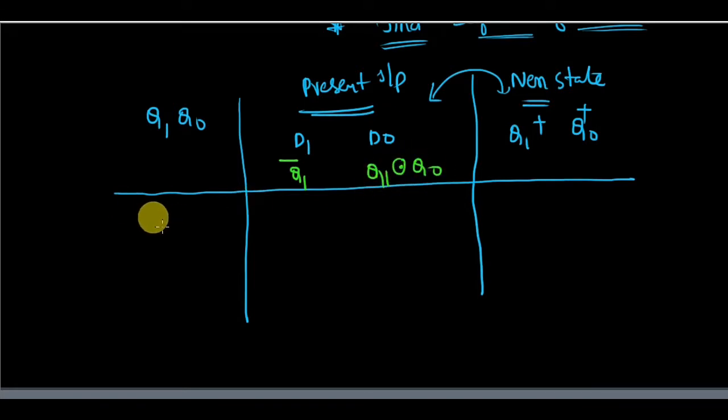Let me start with the present state assuming as 0 0. Then if you do this, this is q1 bar so it will be 1, and here q1 XOR with q0 so this will be 1. So my next state will be the same, that is 1 1.